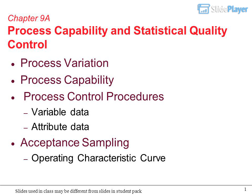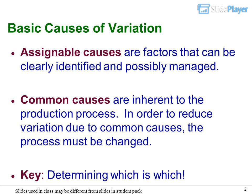Chapter 9A: Process Capability and Statistical Quality Control. Topics covered include process variation, process capability, process control procedures for variable data and attribute data, acceptance sampling, operating characteristic curve, and basic causes of variation.